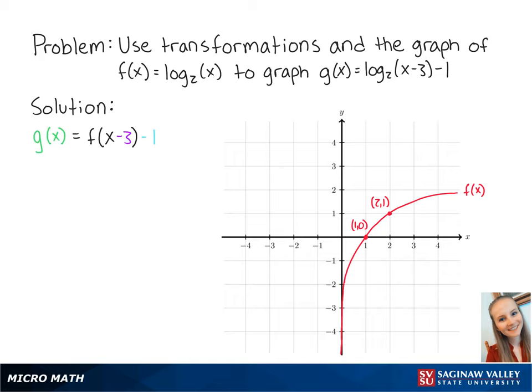g(x) = f(x-3) - 1. Subtracting 3 from x means that we shift the graph 3 units to the right.